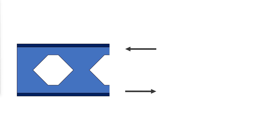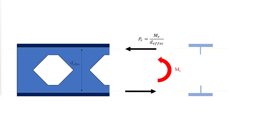The axial force is a function of the global bending moment in the beam, similar to a chord force in a truss. The axial force is calculated by dividing the global moment in the beam by the distance between the centroids of the top and bottom tees, D effective.